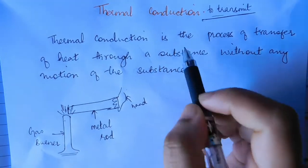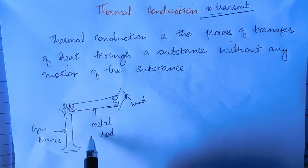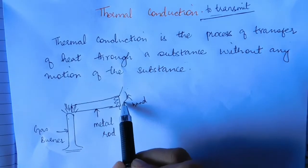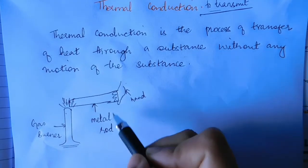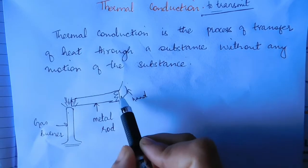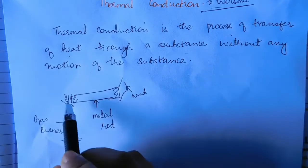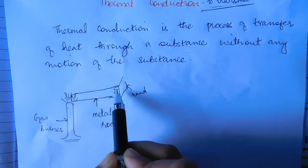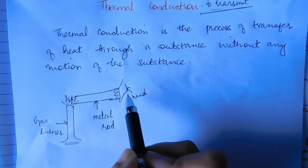To understand it better, let's take a gas burner and a metal rod. You hold one end of the metal rod in the flame and another end by your hand. What happens is at first you begin to feel the warmth, then after some time it becomes so hot that you cannot hold it anymore. The heat from the burner is being transmitted through this rod and reaches our hand — that's why you feel the hotness.